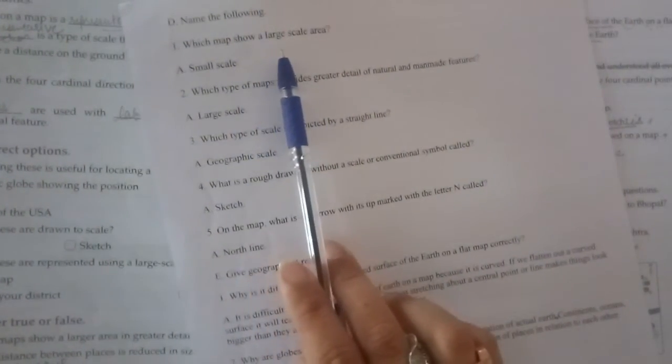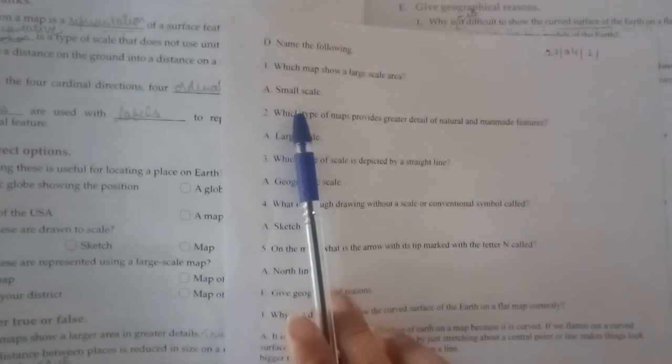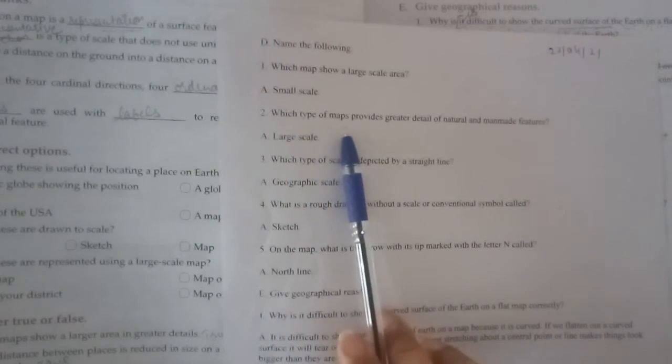Which map shows a large area? Small scale. Which type of map provides great detail of natural and man-made features? Large scale maps. Which type of scale is depicted by a straight line? Geographical scale. What is a drawing without a scale or conventional symbol? It is called a sketch, that is a rough drawing.